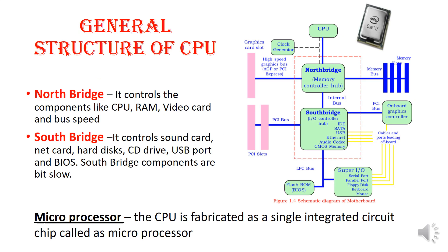Then, the general structure of the CPU is divided into two parts: North Bridge and South Bridge. North Bridge components include CPU, RAM, video card, and bus speed. South Bridge components include sound card, net card, hard disk, CD drive, USB port, and BIOS. South Bridge components are slower compared to North Bridge components.